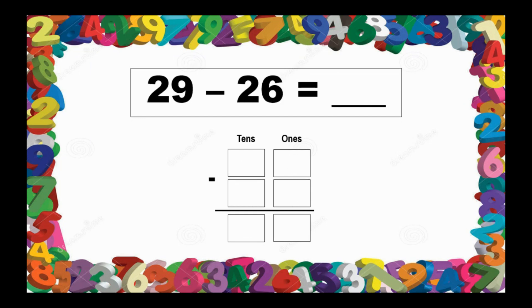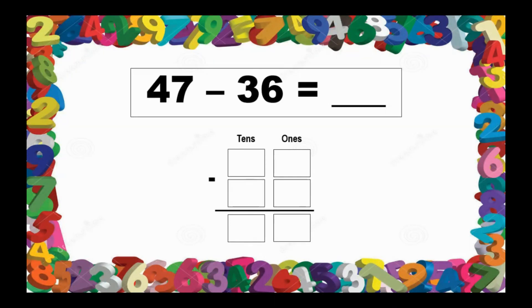How about 29 minus 26? Write 29: 9 in the 1s place and 2 in the 10s place. And 26: 6 in the 1s and 2 in the 10s place. Subtract the 1s: 9 minus 6 equals 3, and 2 minus 2 equals 0. So, 29 minus 26 equals 3. Next, 47 minus 36: 7 in the 1s place and 4 in the 10s place; 6 in the 1s and 3 in the 10s. 7 minus 6 equals 1, and 4 minus 3 equals 1. So, 47 minus 36 equals 11.